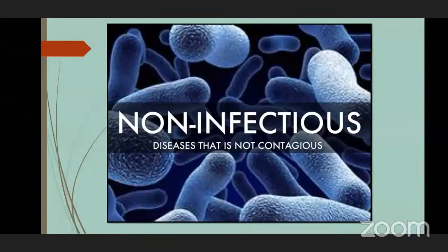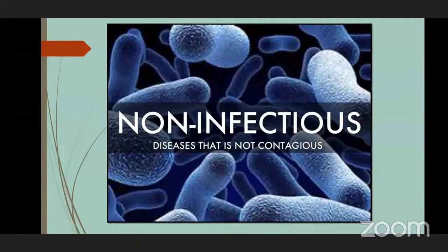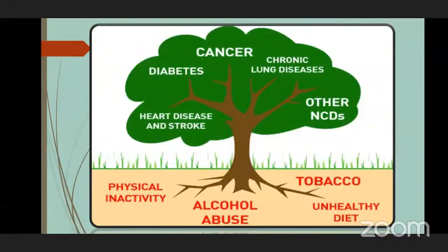We have seen a few infectious diseases. Now let's see non-infectious diseases. Diseases which do not occur through infections or body contacts are known as non-infectious diseases. Such diseases arise in the human body itself because of other reasons. Examples include heart disease and stroke, diabetes, cancer, and chronic lung disease. The root causes shown are physical inactivity, use of alcohol, tobacco, and an unhealthy diet.